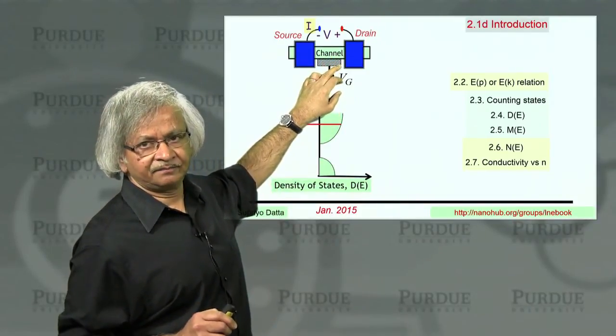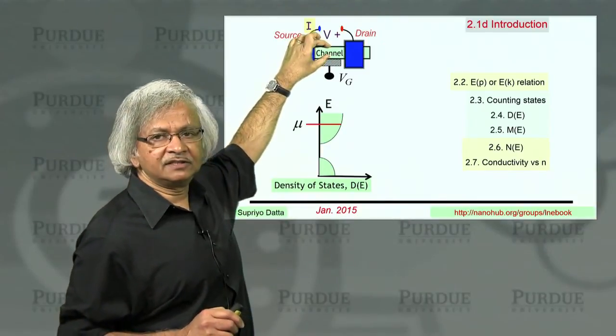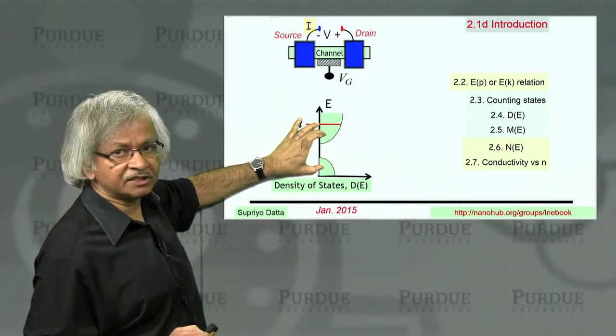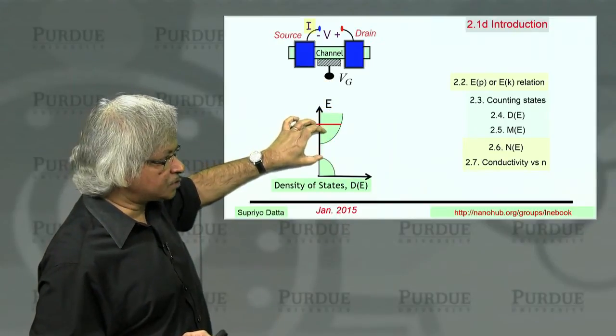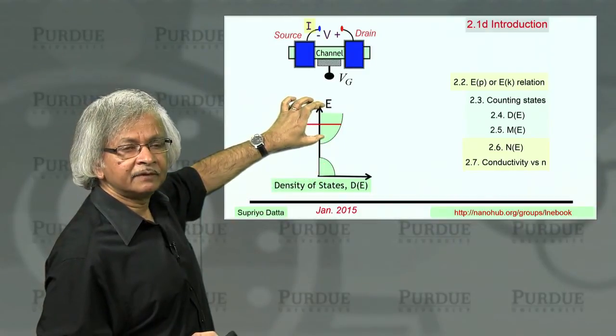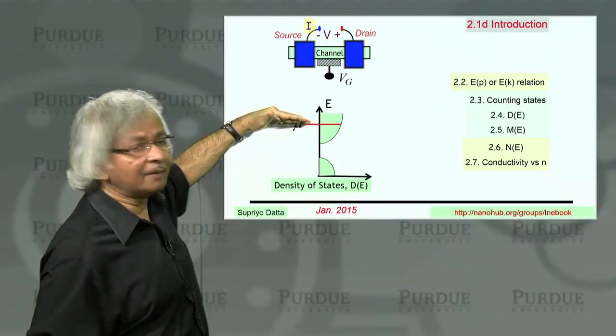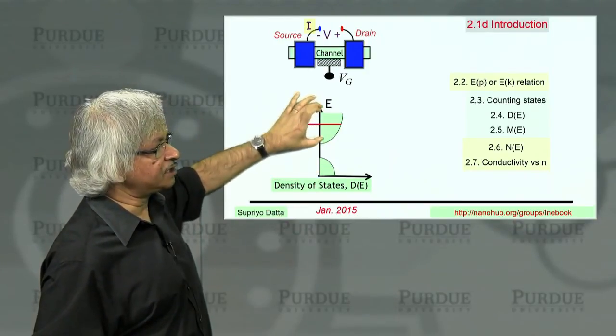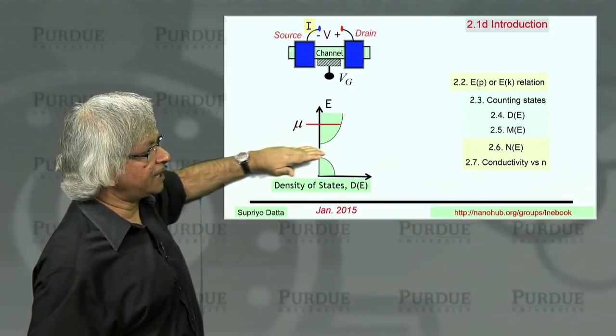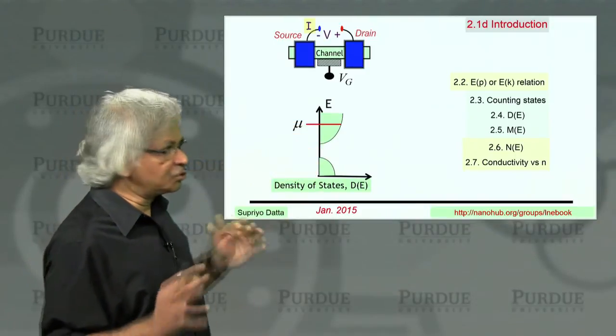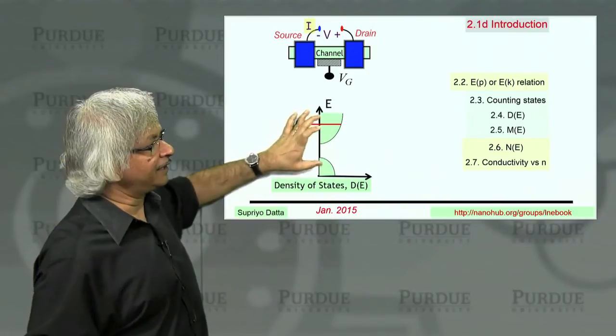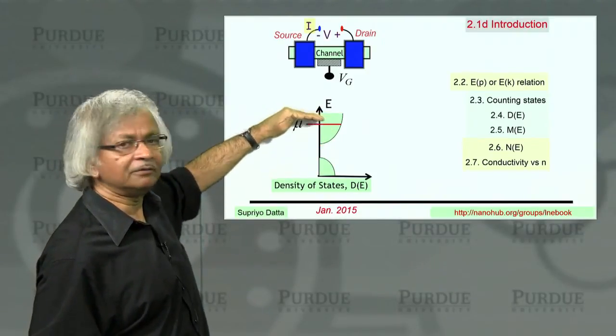All that this voltage does is to move the energy levels in the channel up and down. You have this chemical potential here, and you have all these energy levels in the channel. If you put a positive voltage, it gets pulled down. And if you put a negative voltage, everything gets pulled up. And since conductivity depends on where the chemical potential is, you can change the conductivity. If you raise it enough, you can stop the current altogether if the chemical potential happens to get into the gap. Because there's two ways of thinking about it. One is chemical potential is fixed - we move the energy levels up and down. Or you could think the energy level is fixed - we move the chemical potential up and down.